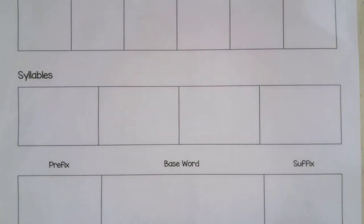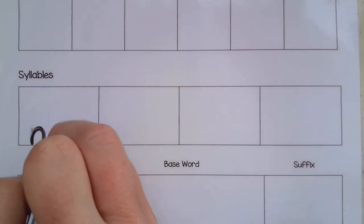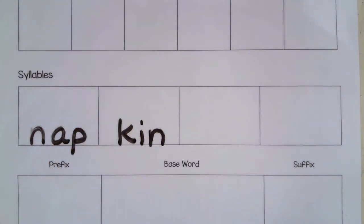So let's say we want students to write the word napkin. We have them syllabicate the word napkin and then they write it. Napkin. Napkin. And then they erase and read. Napkin.